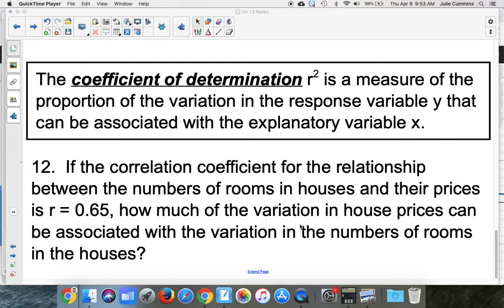Let me show you what it means in one of the examples here. We have a correlation coefficient for the relationship between the number of rooms in houses and their prices. You would think that the larger a house, the more rooms it has, the more expensive it is. That does seem to be a positive linear relationship.